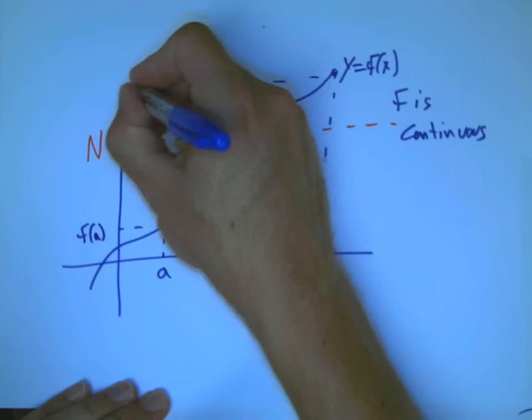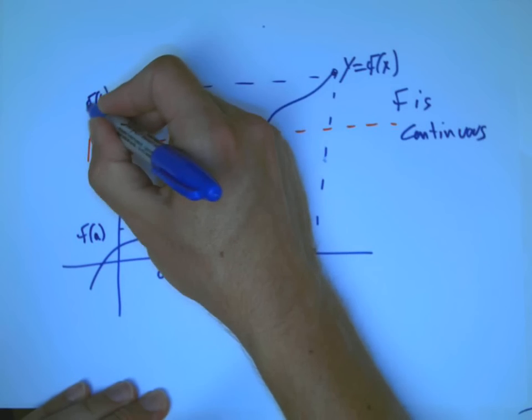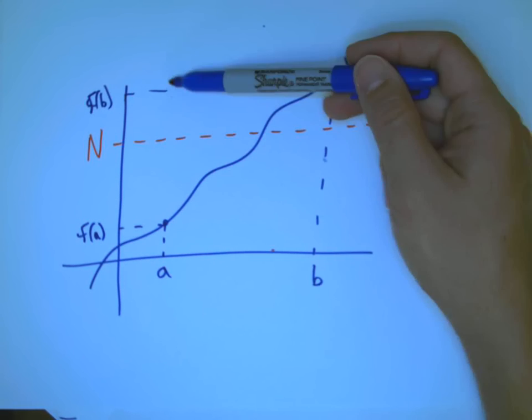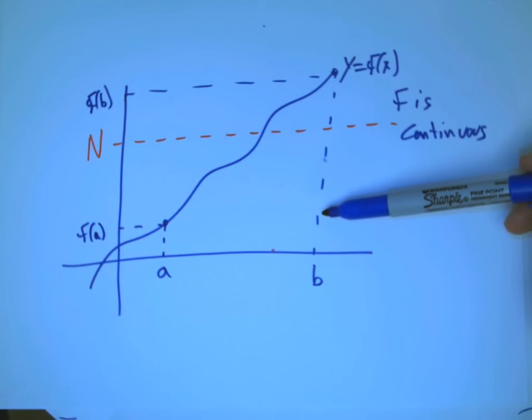I say x is going from a to b, and as long as f of a, that height, and f of b bracket n, as long as I start out below and end up above, I must cross.